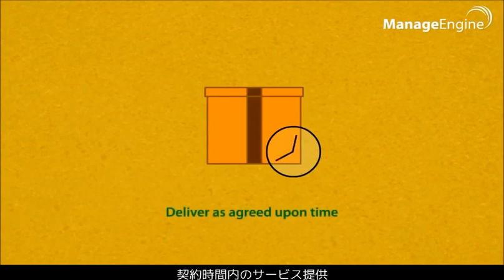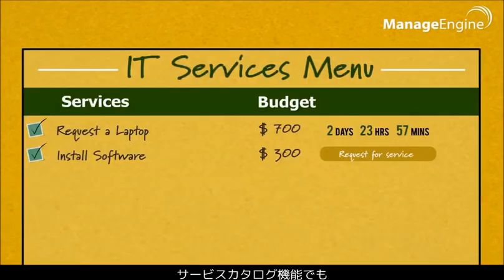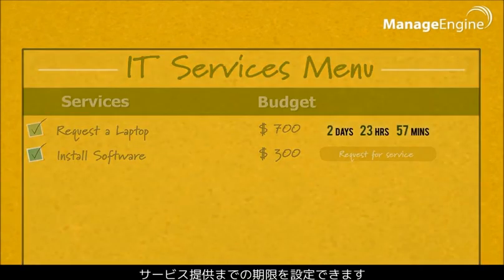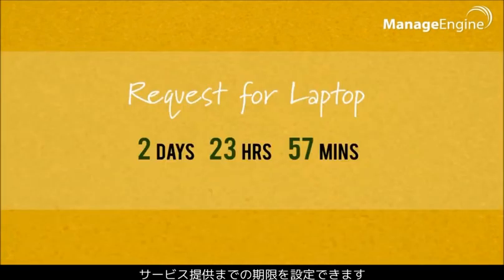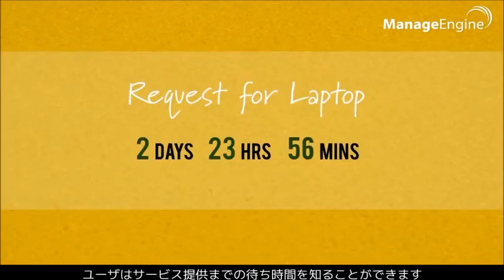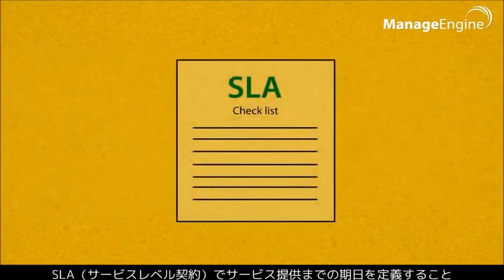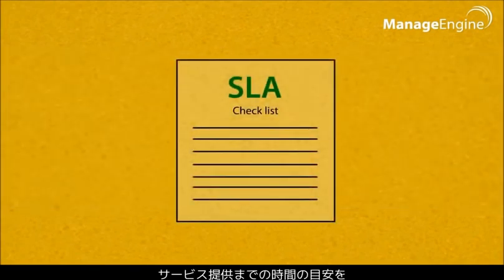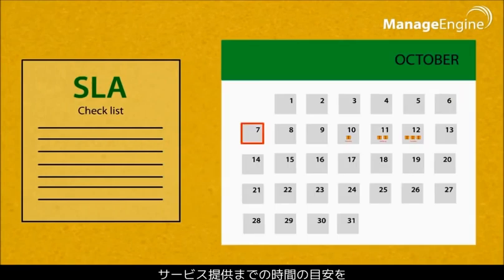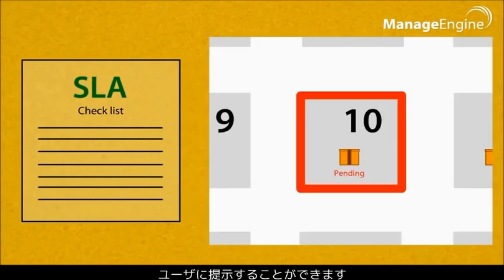The service catalog also captures the delivery time so that the users will know the wait time for the service to be delivered. Defining the delivery time for each service is decided by the service level agreement, which ensures that the request is delivered as agreed upon time.